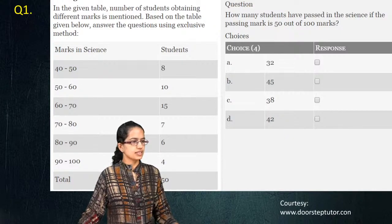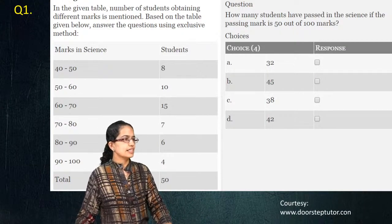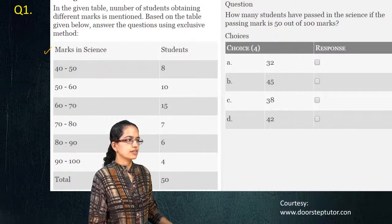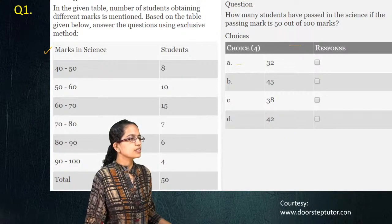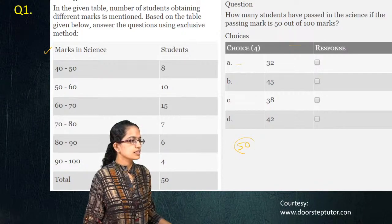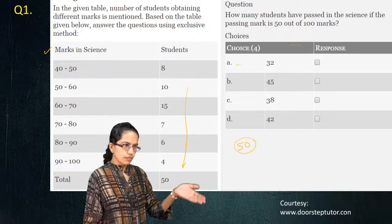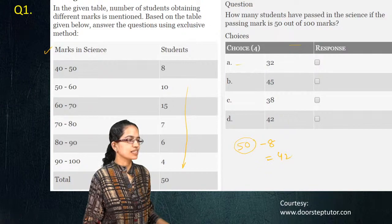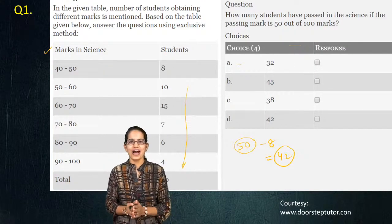Radika has the first answer as option D. Let's wait for a few more answers before proceeding. You have a table showing marks in science and the number of students. Read the question carefully: how many students are able to pass if the passing mark is 50 out of 100? Everyone who scores 50 or above falls in this category. So you can add those up, or simply say 50 minus 8, which gives 42.